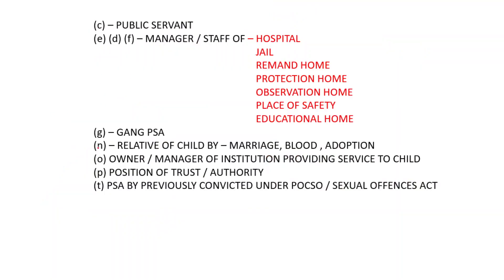Special accused also includes public servants, managers or staff of hospitals, jails, remand homes, protection homes, observation homes, places of safety, and educational institutions. Also included: gang penetrative sexual assault (Gang PSA), relatives of the child by marriage, blood or adoption, owners or managers of institutions providing services to children, persons in a position of trust or authority, and those previously convicted under POCSO and Sexual Offenses Acts.